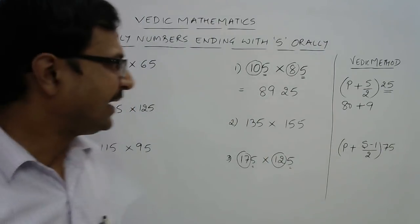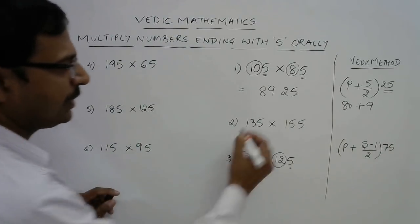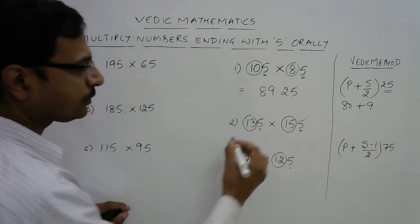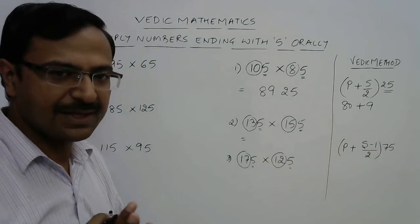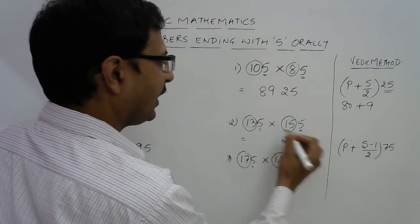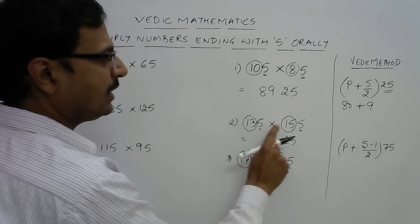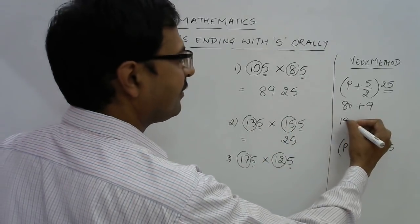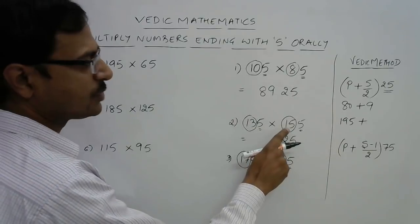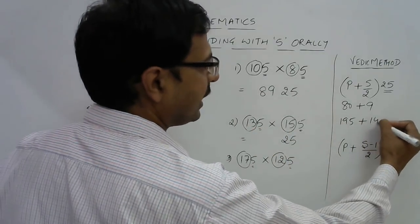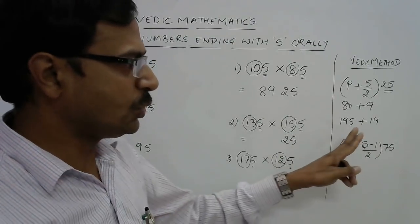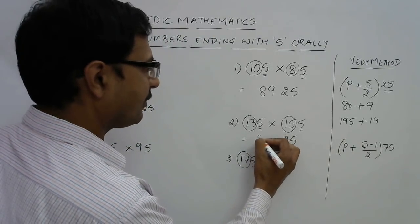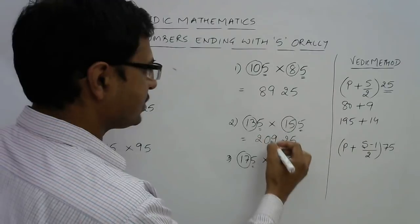Let's see one more question with even sum. We have 13 and 15, so the sum is even, therefore the answer will end with 25. Now 13 into 15: 15 into 10 is 150, 15 into 3 is 45, so 195. Add half of the sum: 15 plus 13 is 28, half of that is 14. If you add these two, you get 209. So 20925 is the final answer.